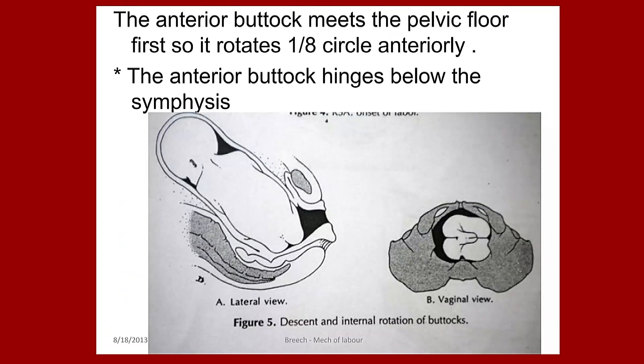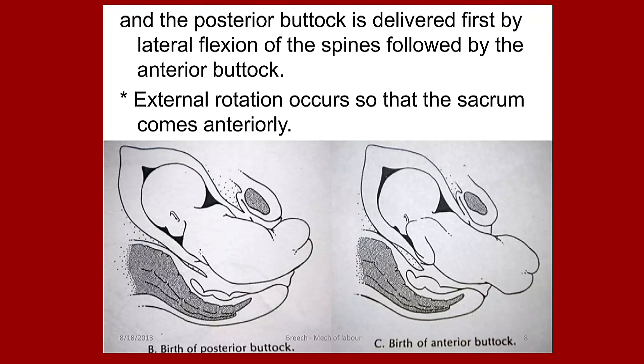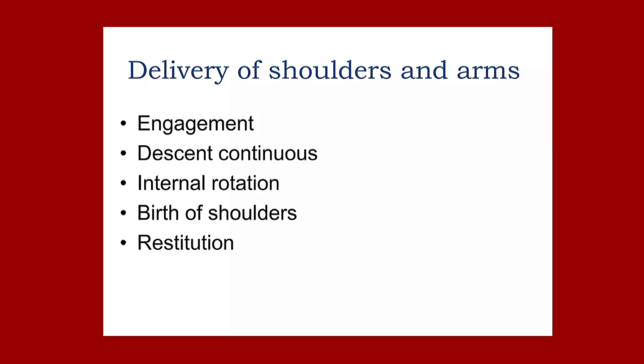The anterior buttocks meets the pelvic floor first, so it rotates one-eighth of a circle anteriorly. The anterior buttocks hinges below the symphysis pubis, and the posterior buttocks is delivered first by lateral flexion of the spine, followed by the anterior buttocks. Then external rotation occurs so that the sacrum comes anteriorly.